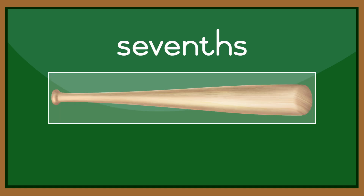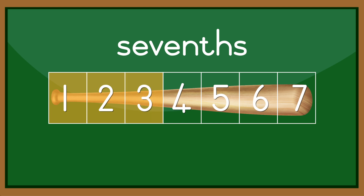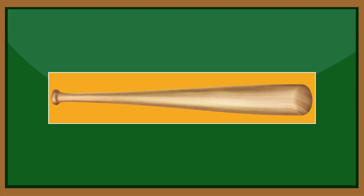In this example, the whole is divided into seven parts. Those parts are called sevenths. One seventh, two sevenths, three sevenths, four sevenths, five sevenths, six sevenths, seven sevenths, which equal a whole.